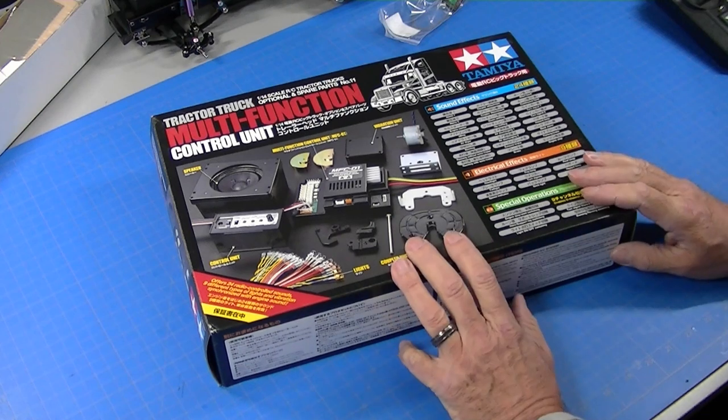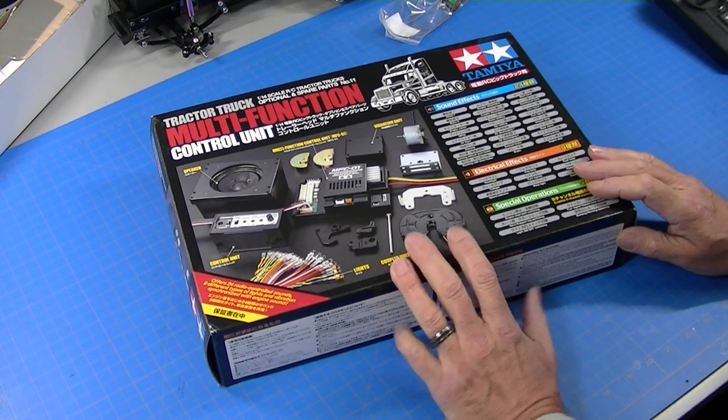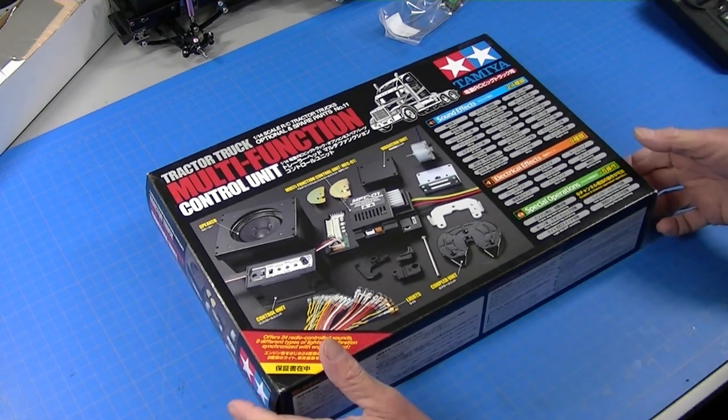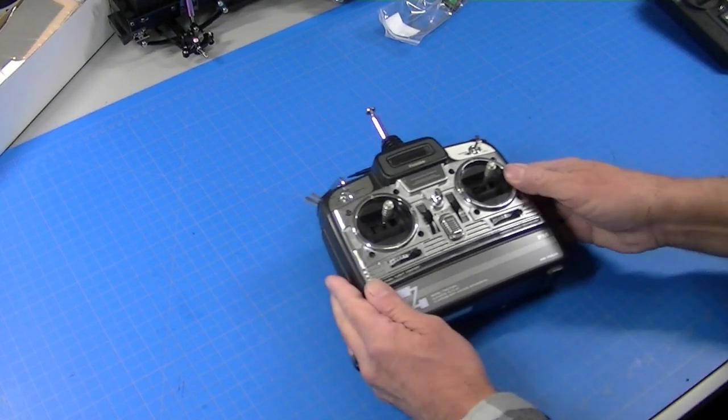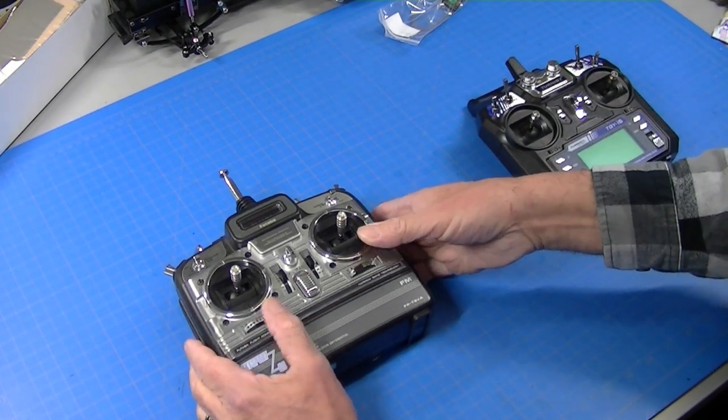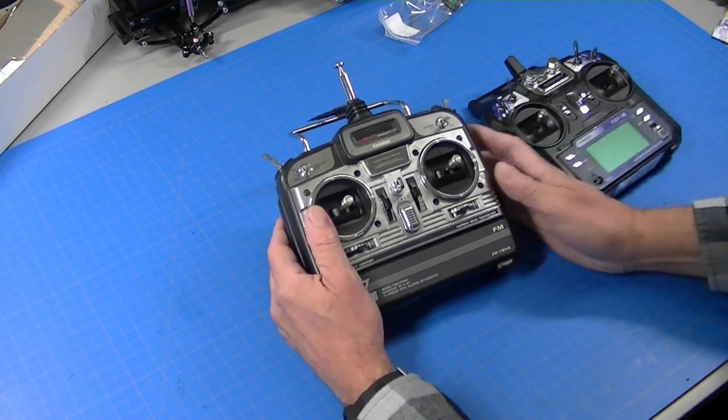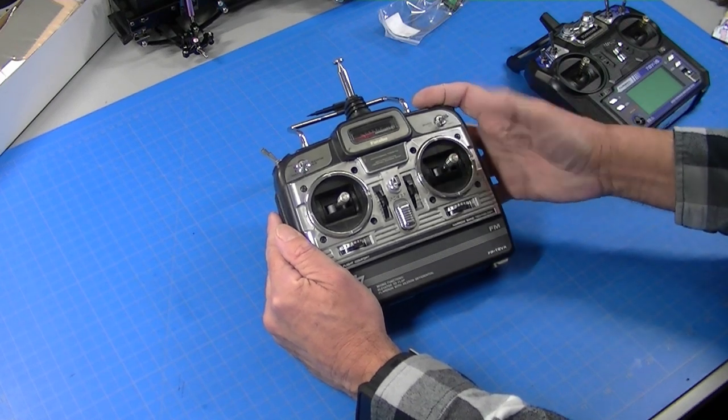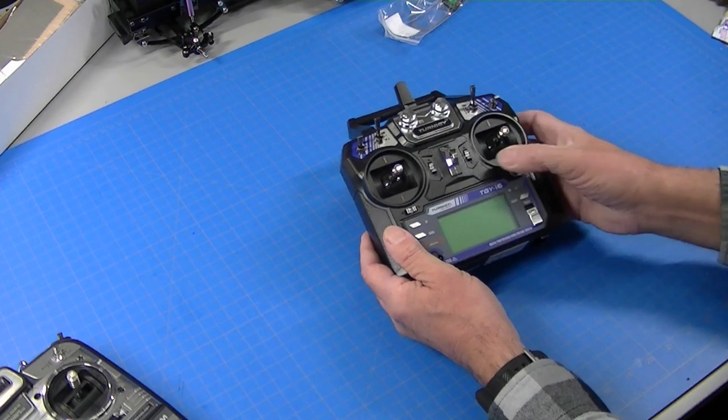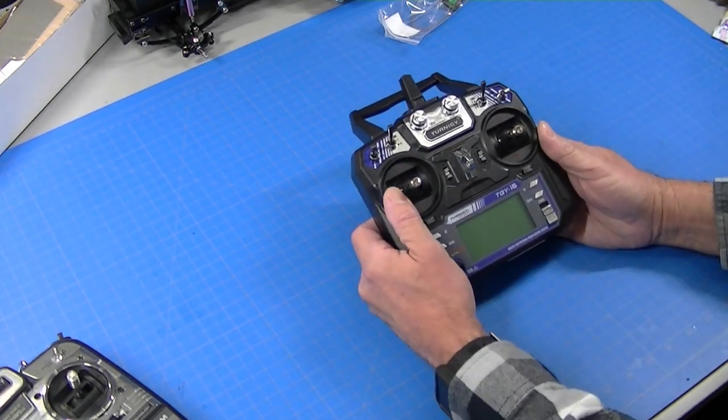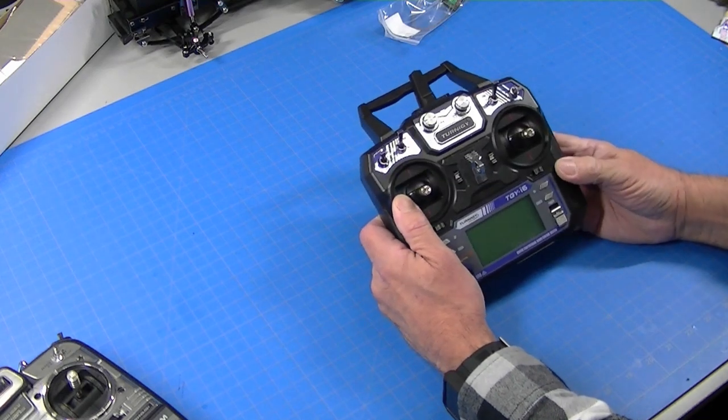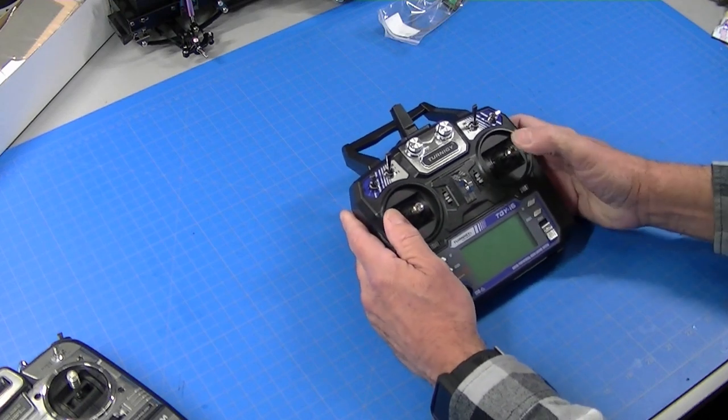Before I get too far along, I want to talk about the basic function of this MFC unit. Tamiya designed this years ago when radios were a little bit different than they are now. This is a transmitter from the past and you can see it has trims that just slide back and forth and the MFC unit was designed so if you put this up it would do one function and if you put that up and that up it would do a different function. Now the problem with that is modern radios have digital trims. They're just little switches.